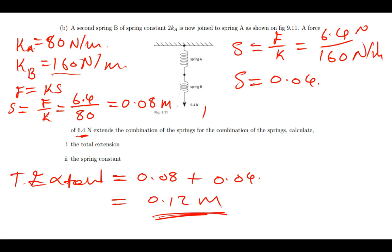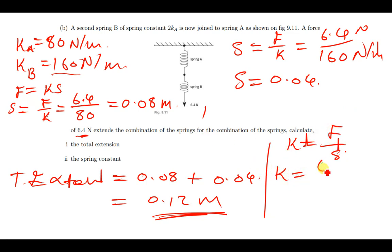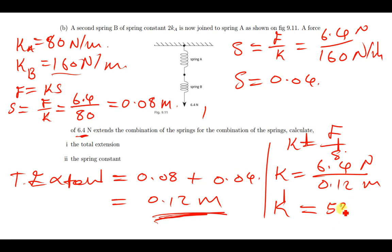From there, we find the new combined spring constant. K equals F over S, using the total extension. So K equals 6.4 divided by 0.12. The force is in newtons and the extension in meters. Dividing gives the new spring constant equal to 53.33 newtons per meter. That is the new spring constant for the combined springs.